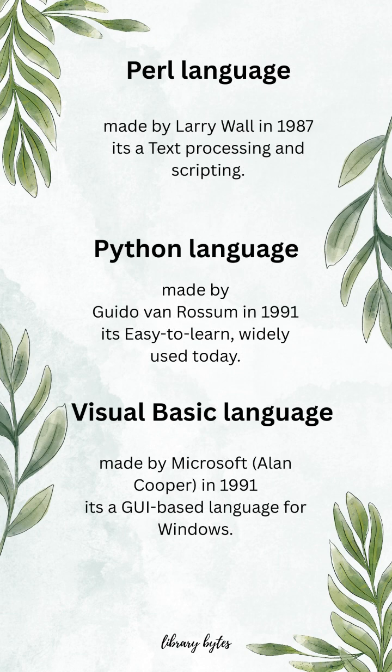Perl, made by Larry Wall in 1987. It's designed for text processing and scripting. Python, made by Guido van Rossum in 1991. It's easy to learn and widely used today.